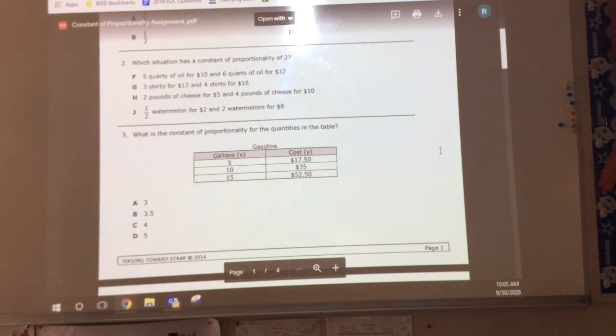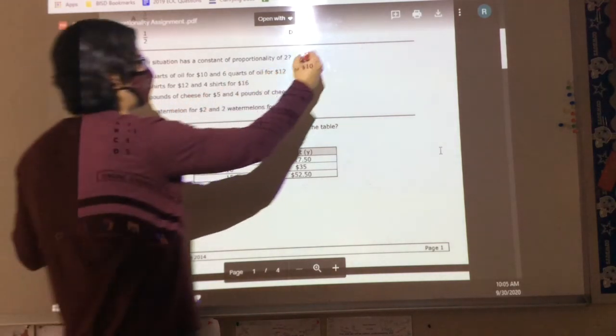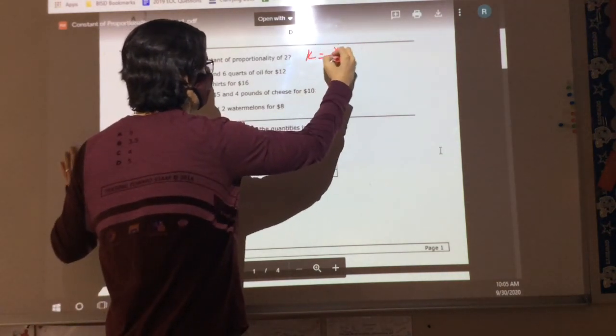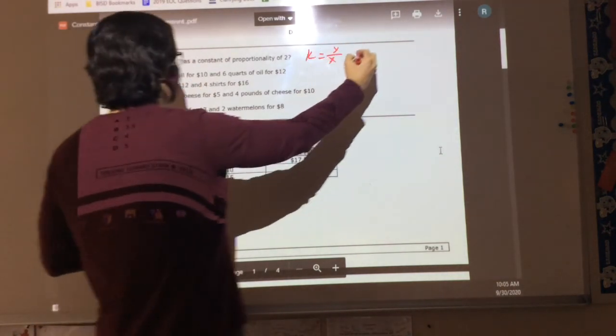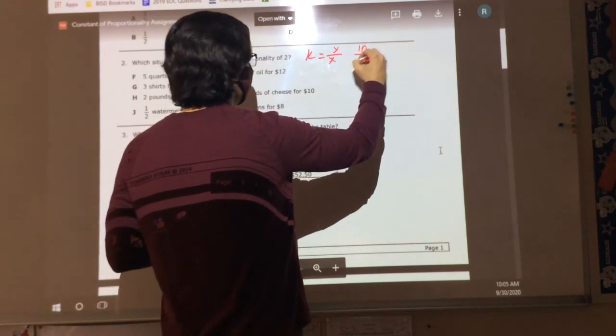We want to know which one has a constant of proportionality of 2. We talked about unit rate yesterday. When we talked about unit rate, what did I say always went on top? Money, right? Money always goes on top. Let me say this. Let's do k equals y over x. We're going to do 10 over 5. What does 10 over 5 equal?